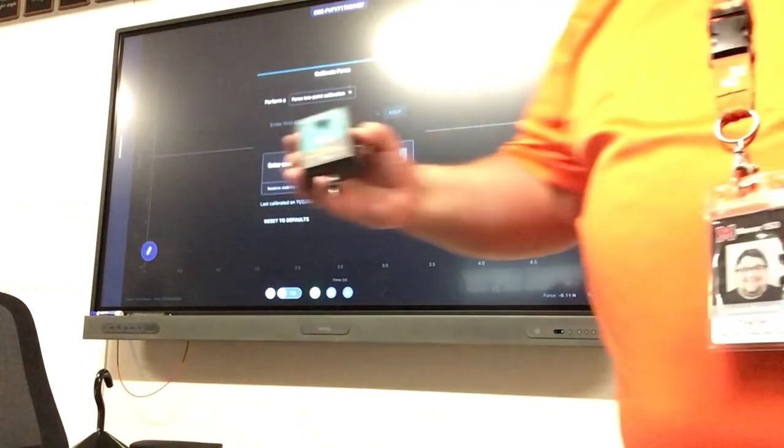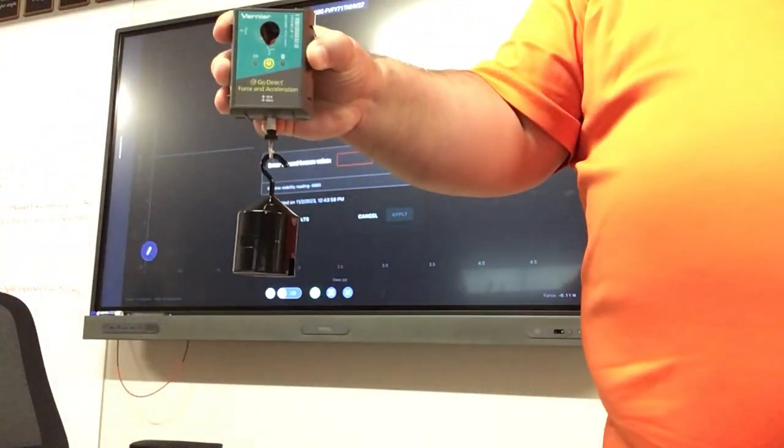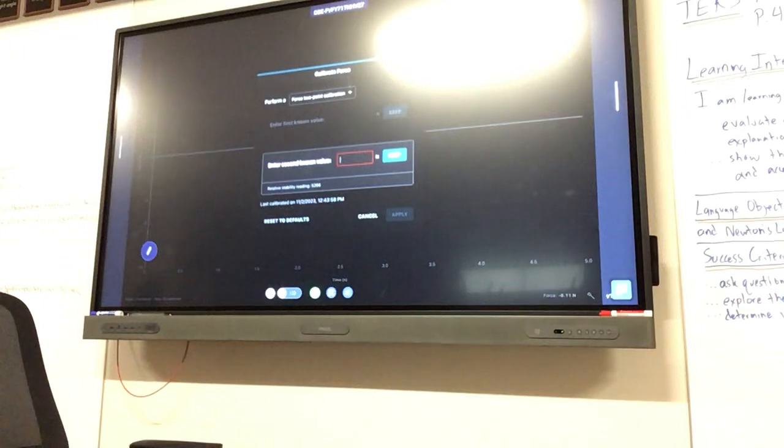Hit enter and then you're going to go and add the mass to it, just like that. And just let it hang there. Don't move it as much as you can. Try to keep it still. And you're just going to type in 4.9 for that one. Hit enter.